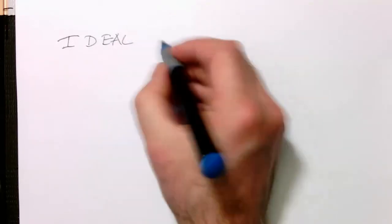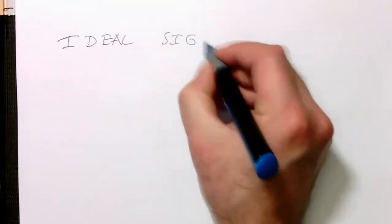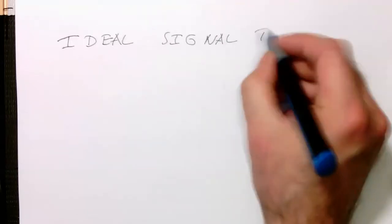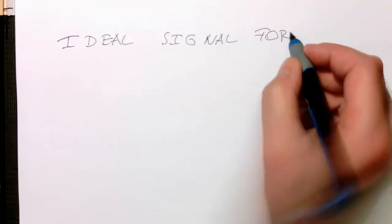What is the ideal signal for cross-correlation?